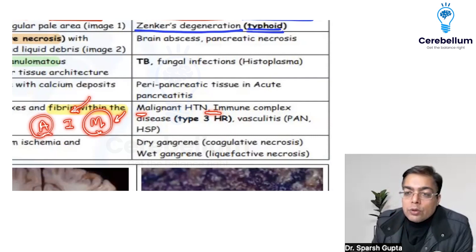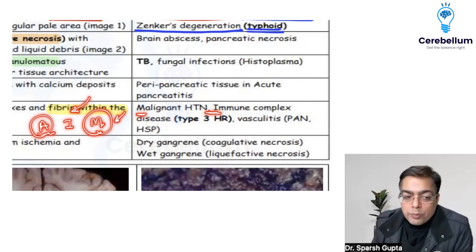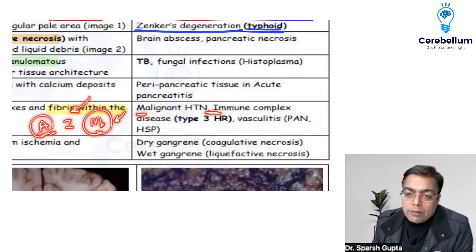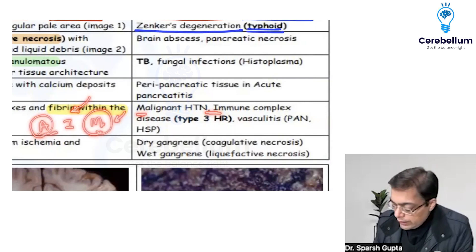You don't have coagulative necrosis in the pancreas simply because there is activation of too many enzymes. These enzymes are activated within a short span of time, so they do not give time for the coagulation of proteins, which is required for coagulative necrosis.